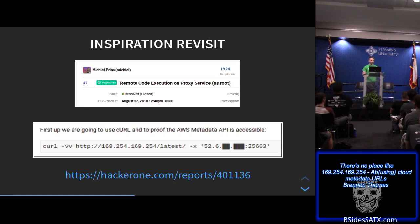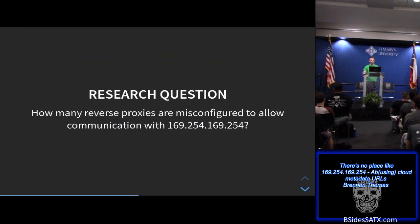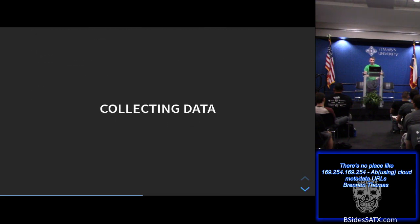Going back to the HackerOne bug report that inspired this talk: the person was using curl to pull the metadata URL, specifying a reverse proxy with the -x flag, and including port 25603, which isn't a common well-known port. I saw that and thought — how many legitimate reverse proxies are misconfigured to allow communication with the 169.254 IP? So I decided to go after ports that are more well-known to be reverse proxy or proxy ports in general.